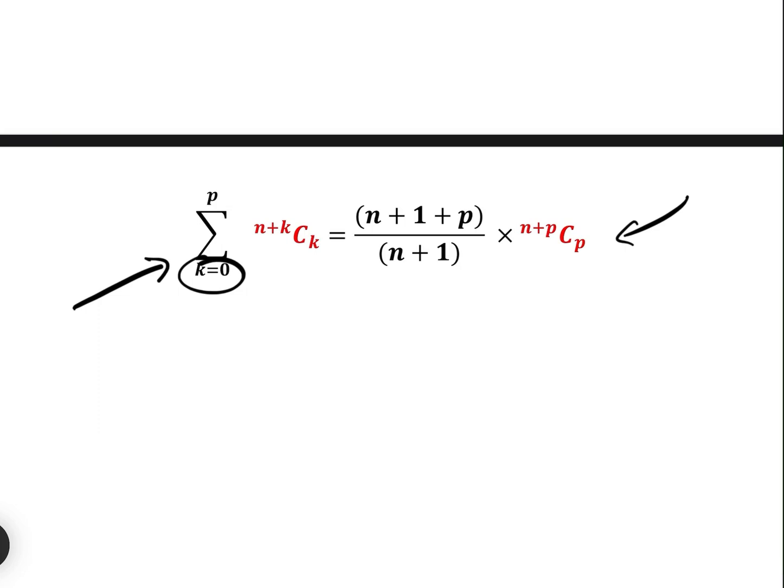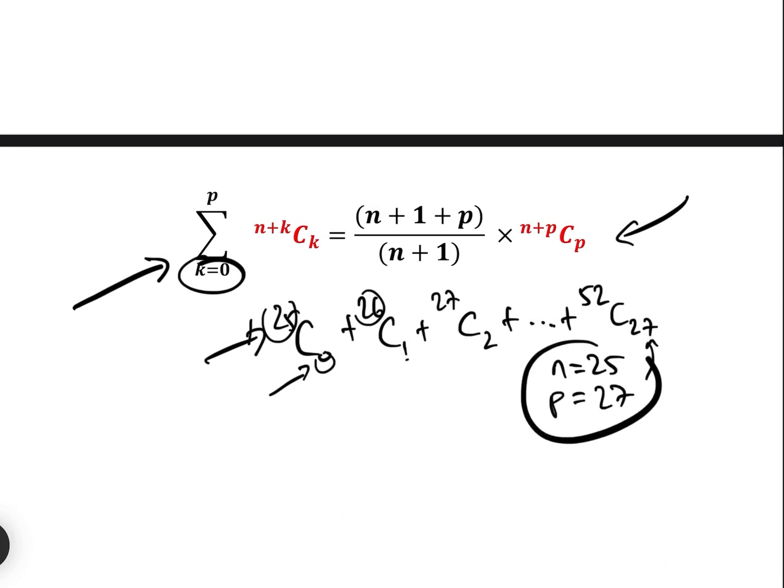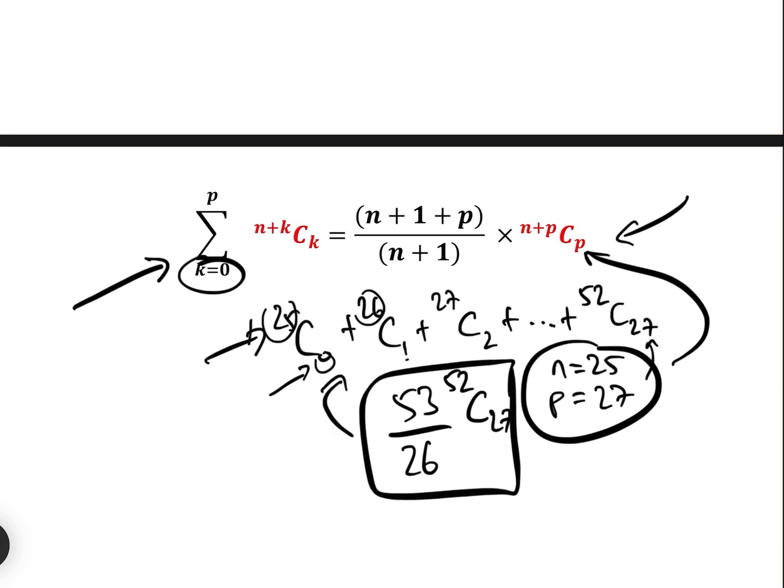Let's just do another one, for example, let's just take 25C0 add 26C1. It's got to start at 0 and the difference between these has got to be the same. So add 27C2 add 52C27, for example, which is very similar. Basically that would be N equals 25 here and P would be 27, which is here. All we then have to do is plug these into this formula, and that gives us N plus 1 plus P is 53, N plus 1 is 26, 52, N plus P C 27. So we can write down the sum of that using this formula, which isn't so difficult to remember.